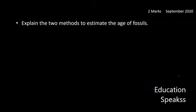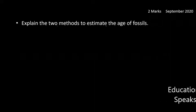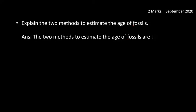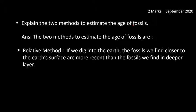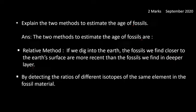First question: explain the two methods to estimate the age of fossils. The two methods are: First, the relative method — if we dig into the earth, fossils closer to the earth's surface are more recent than fossils found in deeper layers. Second, by detecting the ratios of different isotopes of the same element in the fossil material.